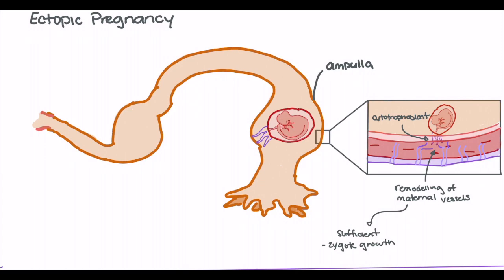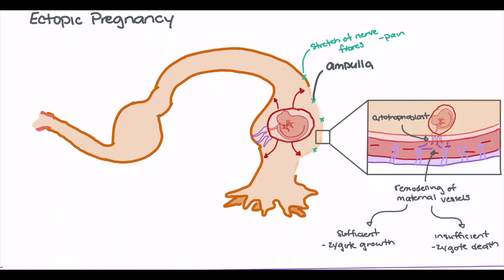If remodeling is sufficient, an adequate amount of blood supply will reach the zygote or blastocyst, resulting in growth. However, if remodeling is insufficient, the blastocyst or zygote will stop growing and die. In the case where remodeling is sufficient and growth begins, ectopic pregnancy can become a life-threatening situation. The blastocyst will begin to grow, putting pressure and strain on the external walls of the fallopian tube. This pressure results in stretching of nerve fibers, presenting as pelvic or abdominal pain. This stretching becomes life-threatening when it leads to destruction of the fallopian tube wall, increasing chances of rupture and bleeding into the retroperitoneal space.